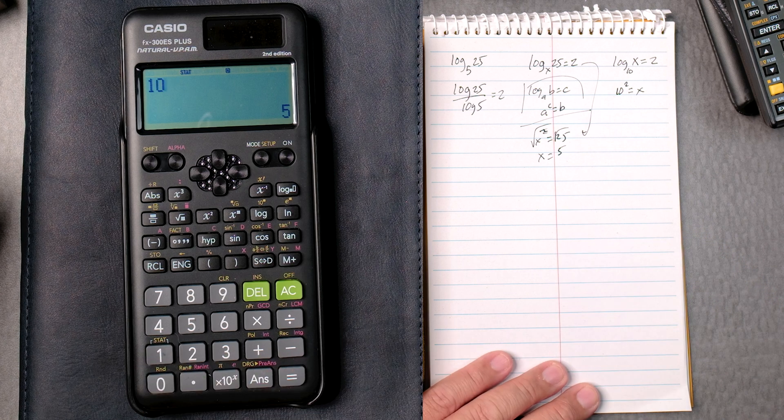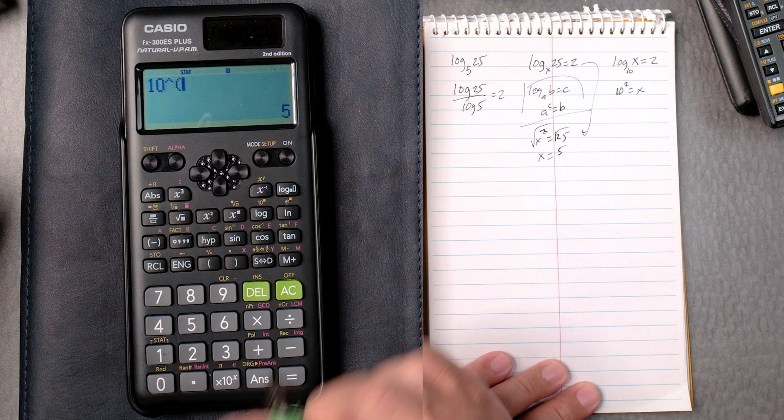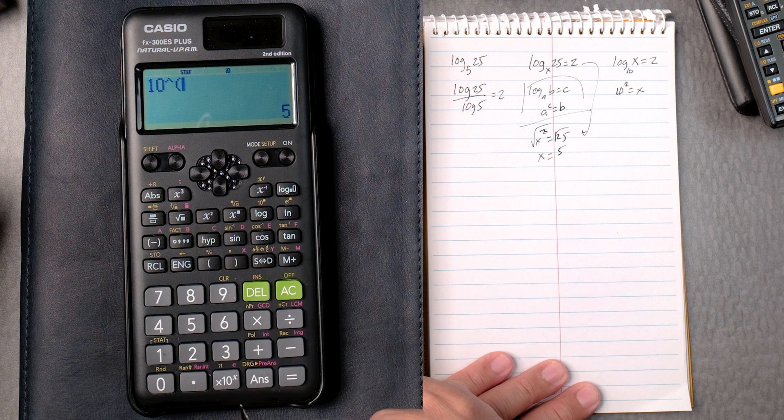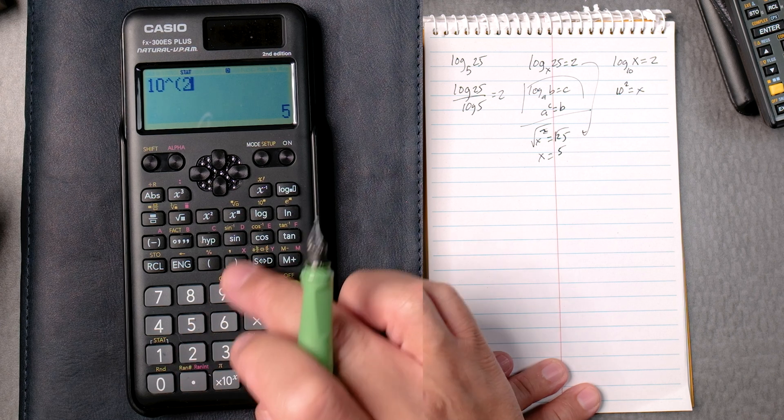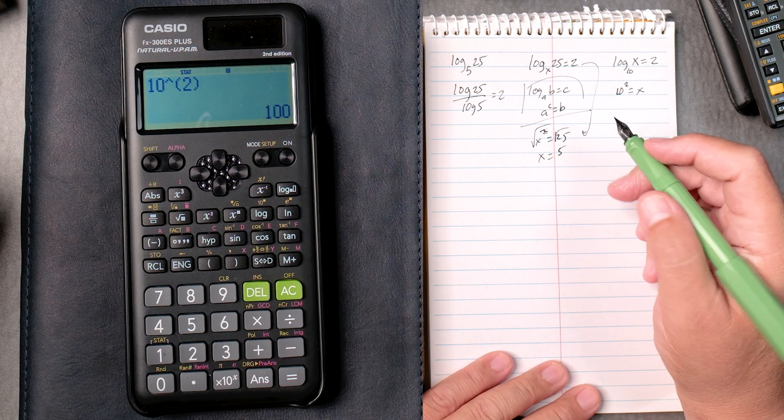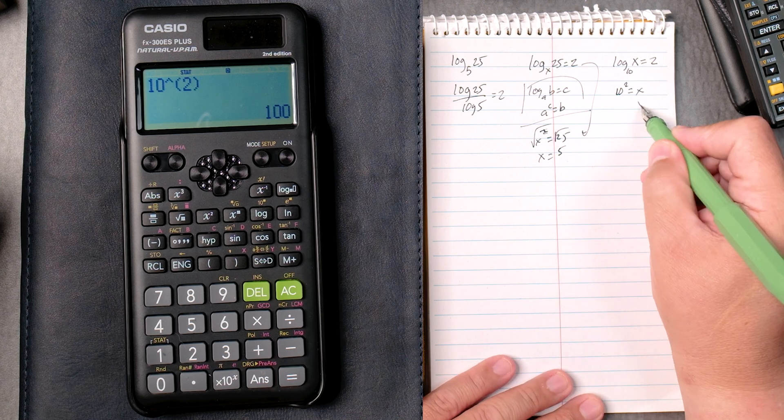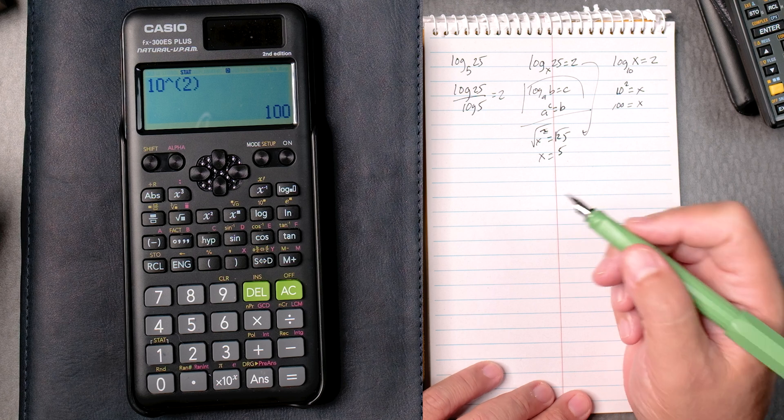10, and then we can use the x to the blank. And we'll pop in 2. We can close it. It gives you a hundred, which we already knew probably.